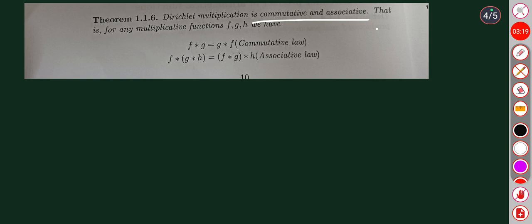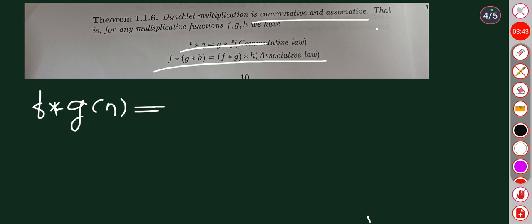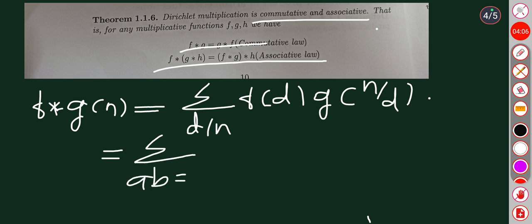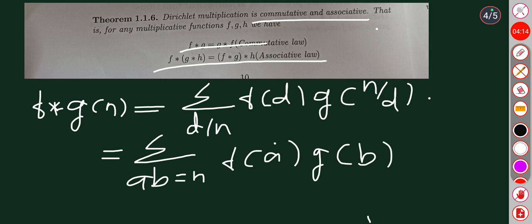For commutativity, we look at f star g of n. By the definition of Dirichlet multiplication, this equals summation over d divides n of f of d times g of n by d, which equals the summation over ab equals n of f of a times g of b.